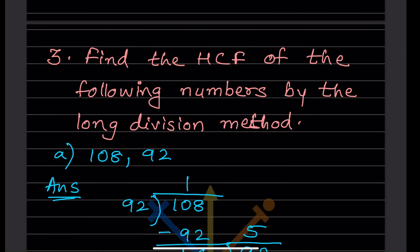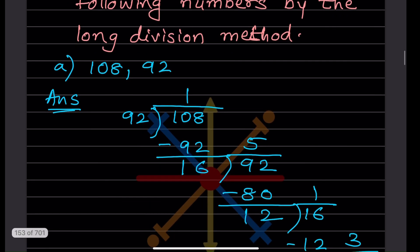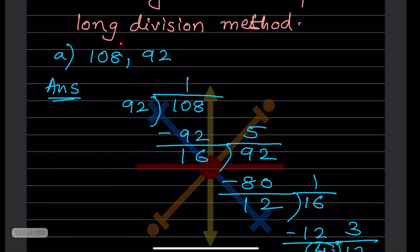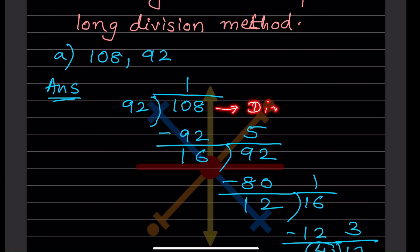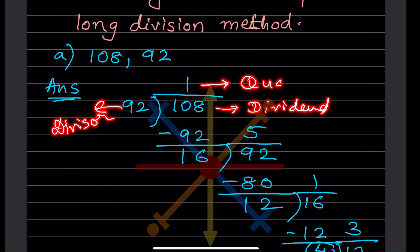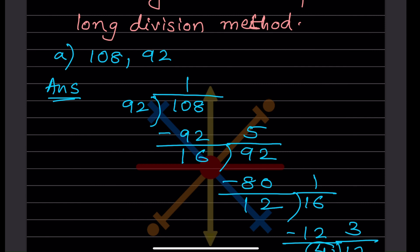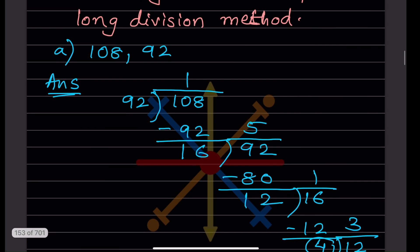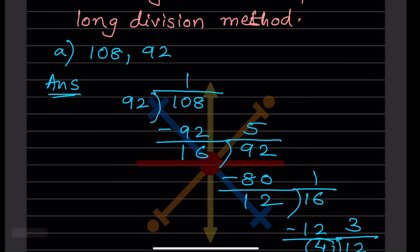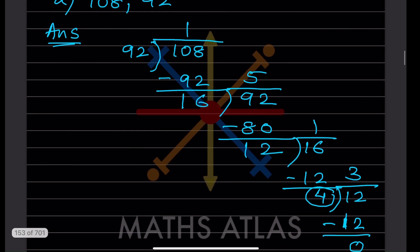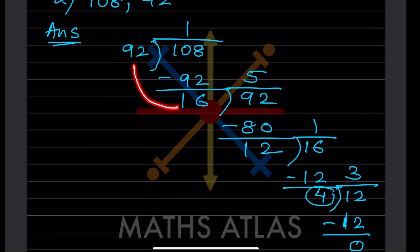Now we find the HCF using the long division method. Here, 108 is the dividend and the other number is the divisor. This gives us a quotient and a remainder. In this method, you divide the numbers repeatedly. After dividing, the remainder is 16. You then use the divisor and this remainder for the next step.